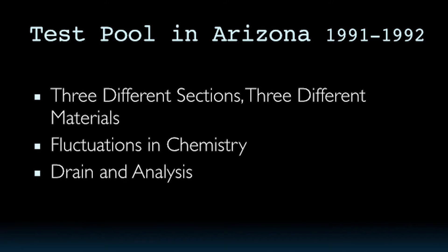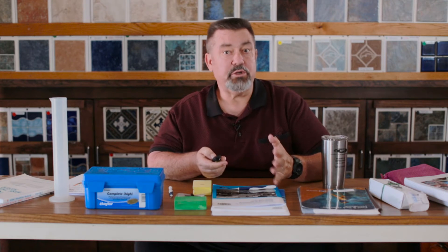Sure enough, remember — three different sections — we grew nodules in all three of these sections, and all three sections had different materials. So no two sections are the same. After about a year, we drained it to analyze it. We generated etching deterioration or spot etching first, which we knew was probably going to happen because of the low carbonate alkalinity. Then we grew nodules in all three sections — actually 50-cent size nodules, as you will see in the photograph.